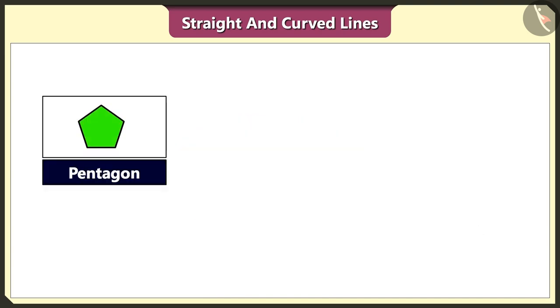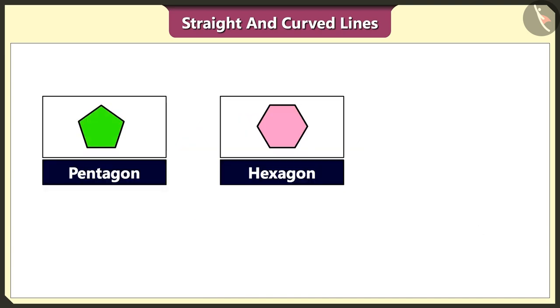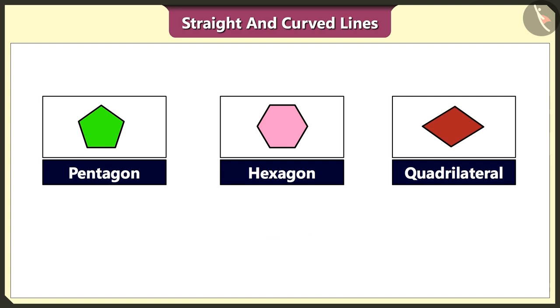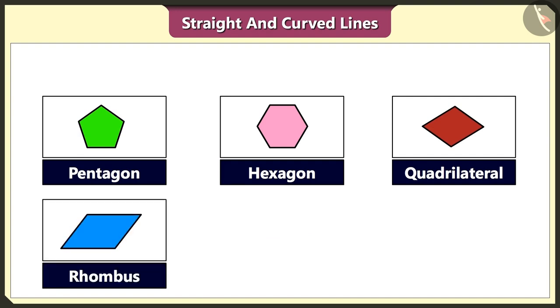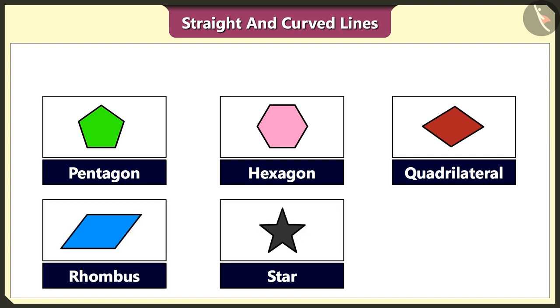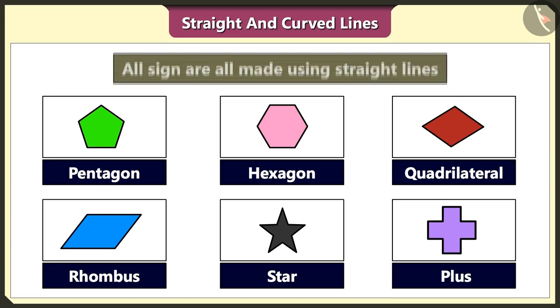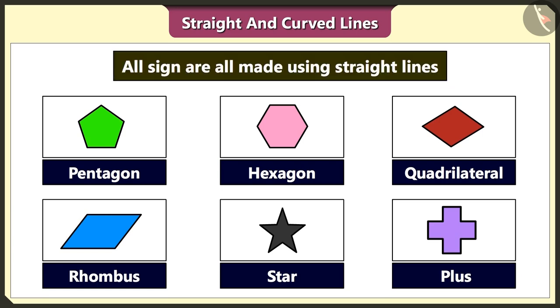Do you know that pentagon, hexagon, quadrilateral, rhombus, star and plus sign are all made using straight lines? Yes, we can make several shapes using straight lines.